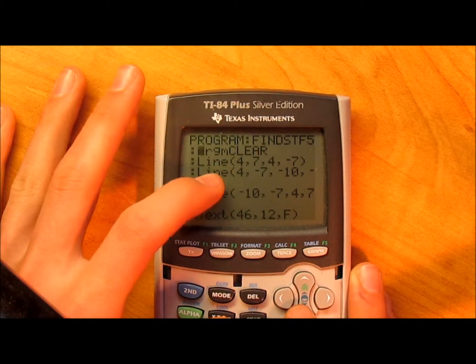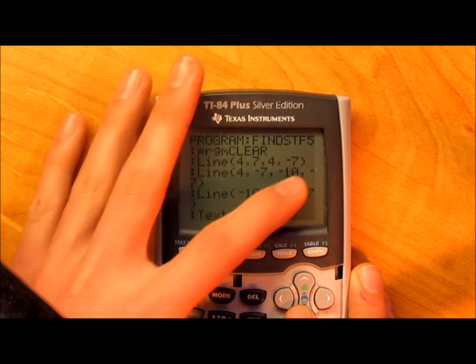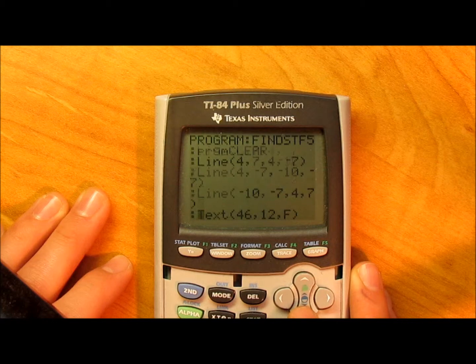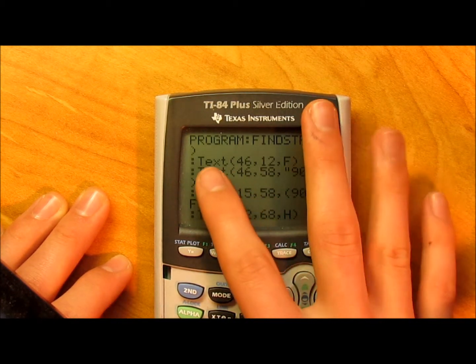Program clear line for one side of the triangle, line for the second side, and line for the third side. So that right there drew the triangle on the graph, or where your graph would normally go.